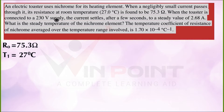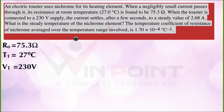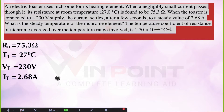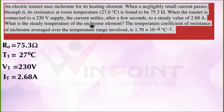The temperature of the nichrome wire will increase when connected. The voltage is given as 230 volts — we call this Vt at a particular temperature. When we increase the voltage, current flow increases, so there will be a change in temperature, that's why we use Vt. After switching on, after a few seconds, there is a steady current value of 2.68 amperes, so It = 2.68 A. The question asks: what is the steady temperature of the nichrome element?